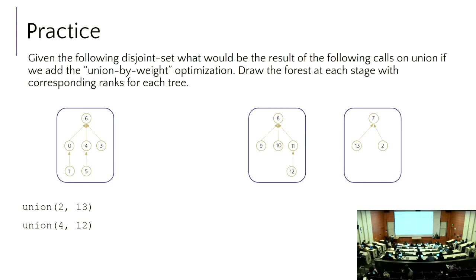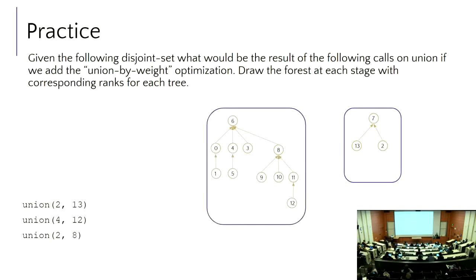Six has one more node than the set with eight, so six is going to absorb the set of eight. Now we are down to only two sets. That did expand the height of the set with six quite a bit because eight was pretty big, but we're doing our best to shorten things. I'll teach you another optimization later this lecture to improve upon this.